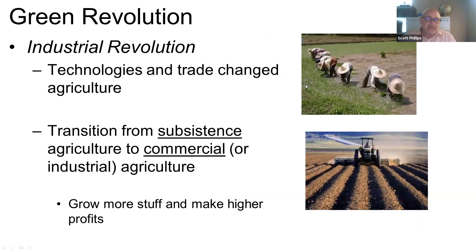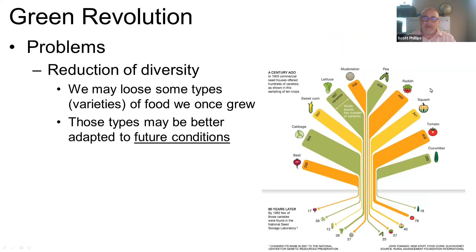We also have the Industrial Revolution, where technologies and trade made big changes in agriculture. We moved from subsistence agriculture — where we grow food simply to feed our families — to commercial agriculture, where we're growing food to sell it in the marketplace. With commercial agriculture you grow more and make higher profits, but there are side effects. Not every variety of food is the most profitable, so where perhaps 100 years ago you might have had 307 varieties of sweet corn, nowadays you'd have 12 varieties, because the others were not the most profitable, and people stopped growing them.